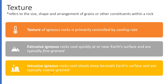Texture refers to the size, shape, and arrangement of the grains — the crystals or minerals in the rock. The texture is important because it's primarily controlled by the cooling rate. The faster the rock cools, the smaller the grains are going to be. You're going to have smaller crystals with a faster cooling rate and larger crystals with a slower cooling rate. Crystals need time to grow, so if it crystallizes over a very slow period of time, you'll see very large crystals.